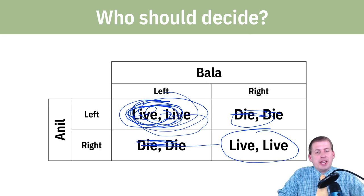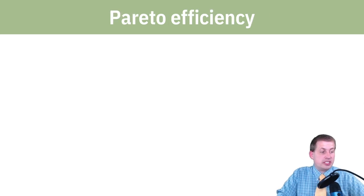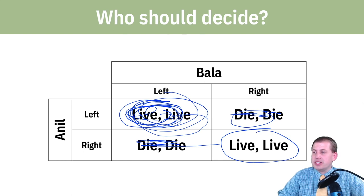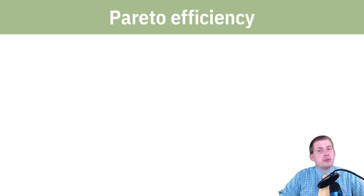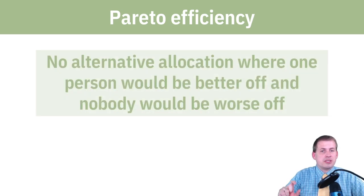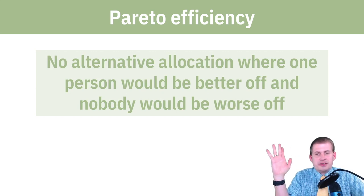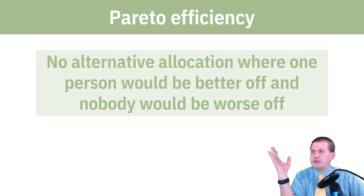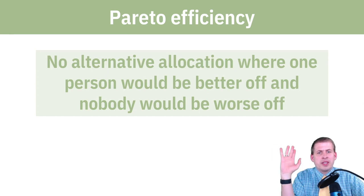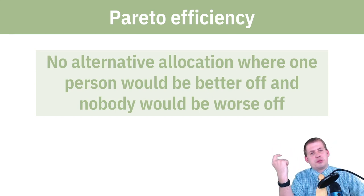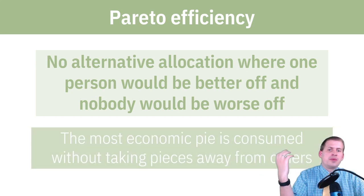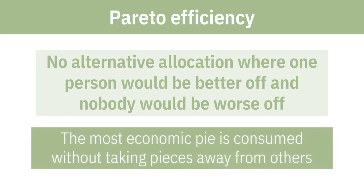Once they decide on an outcome, it's often very hard to change away from it. That gets us into the world of efficiency, where we measure which outcomes are good based on alternative outcomes and whether moving to an alternative hurts anybody. According to the Pareto rule — the official textbook definition — there's no alternative allocation where one person would be better off and nobody would be worse off.